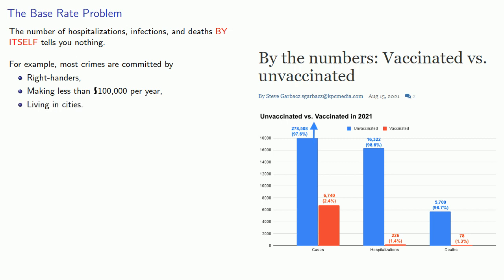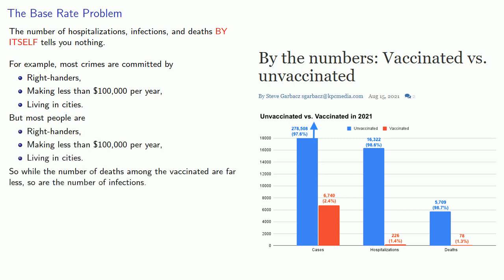Now this rather terrifying data is mitigated by the fact that most people are right-handers, making less than $100,000 a year, living in cities. So while the number of deaths among the vaccinated are far less, so are the number of infections.